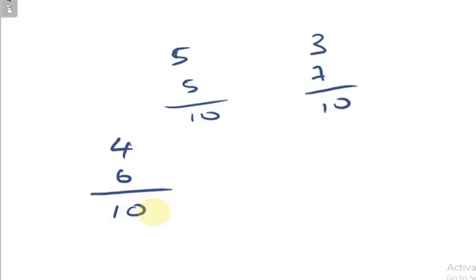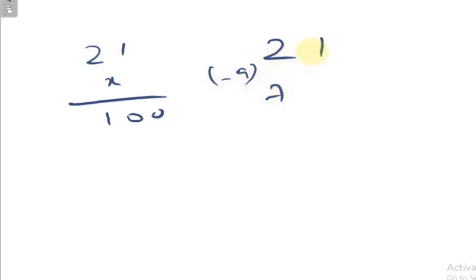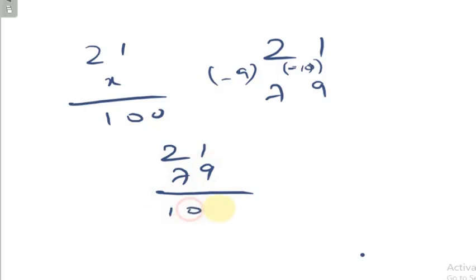This is for a single digit number. Now we will see for a two-digit number. Suppose, what is the complement of 21? You should add some number x so that it gives you 100. Take the tens digit 2, subtract from 9 — you get 7. But the unit digit, 1, you always subtract from 10. So you get 79. The complement of 21 is 79. Add them, you get 100.